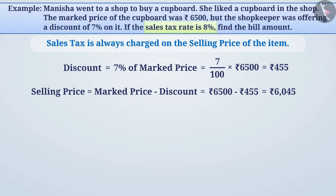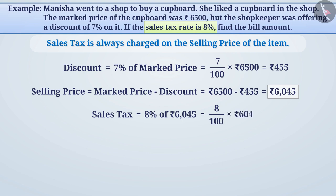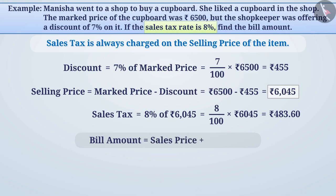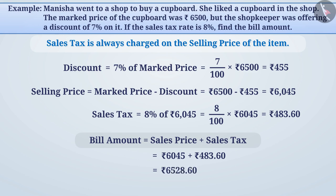Since the sales tax of 8% is applicable on the selling price of 6,045 rupees, sales tax equals 8% of 6,045 rupees, which is 8 divided by 100 multiplied by 6,045 rupees, equal to 483.60 rupees. The bill amount equals selling price plus sales tax, which is 6,045 rupees plus 483.60 rupees, equal to 6,528.60 rupees. So, to buy the cupboard, Manisha will have to pay 6,528.60 rupees.